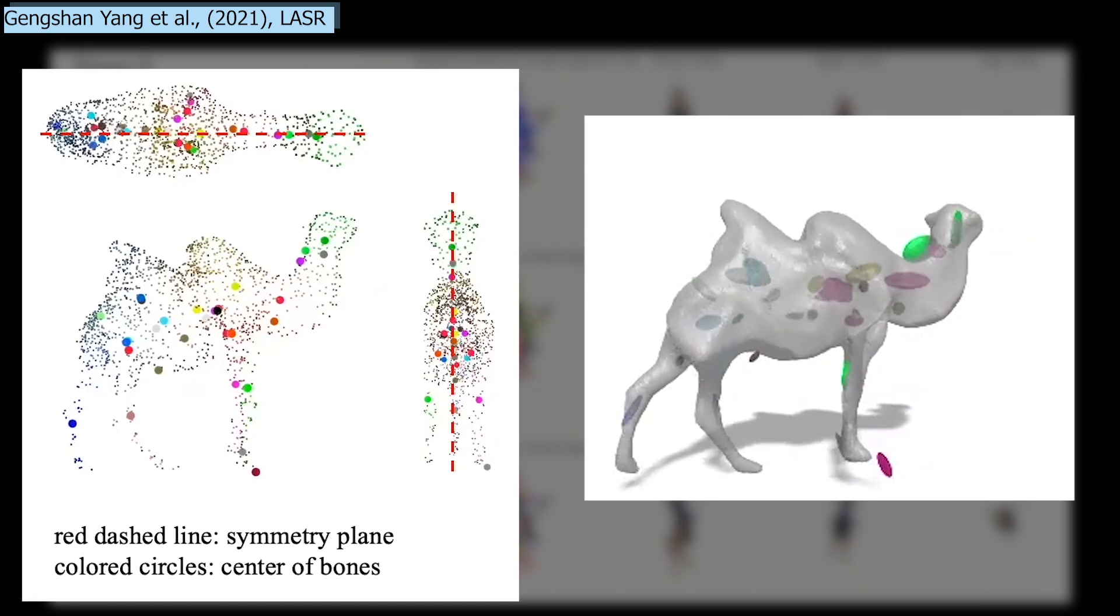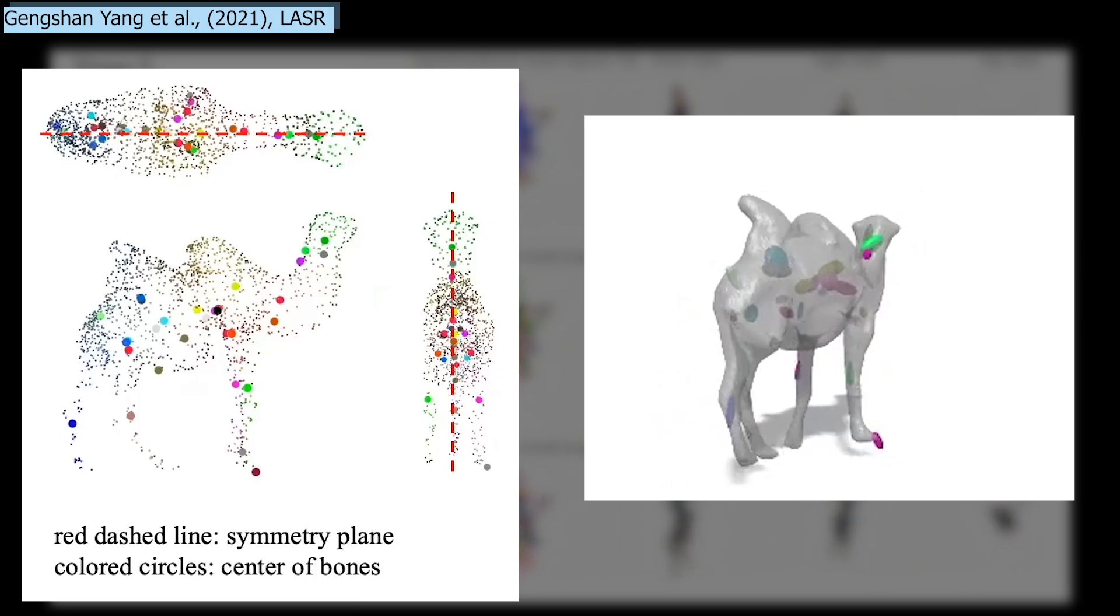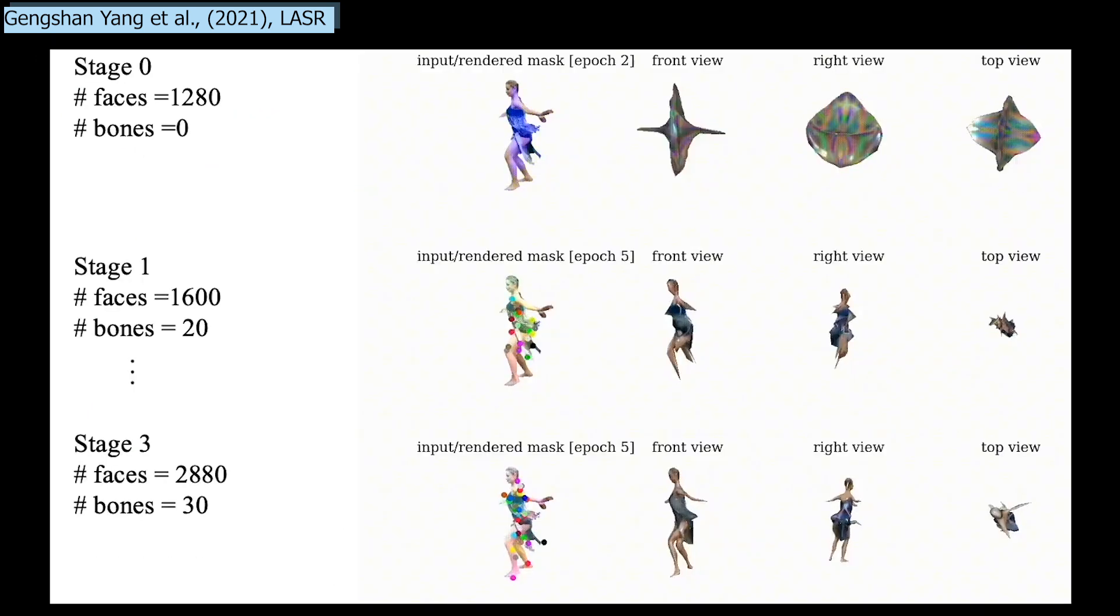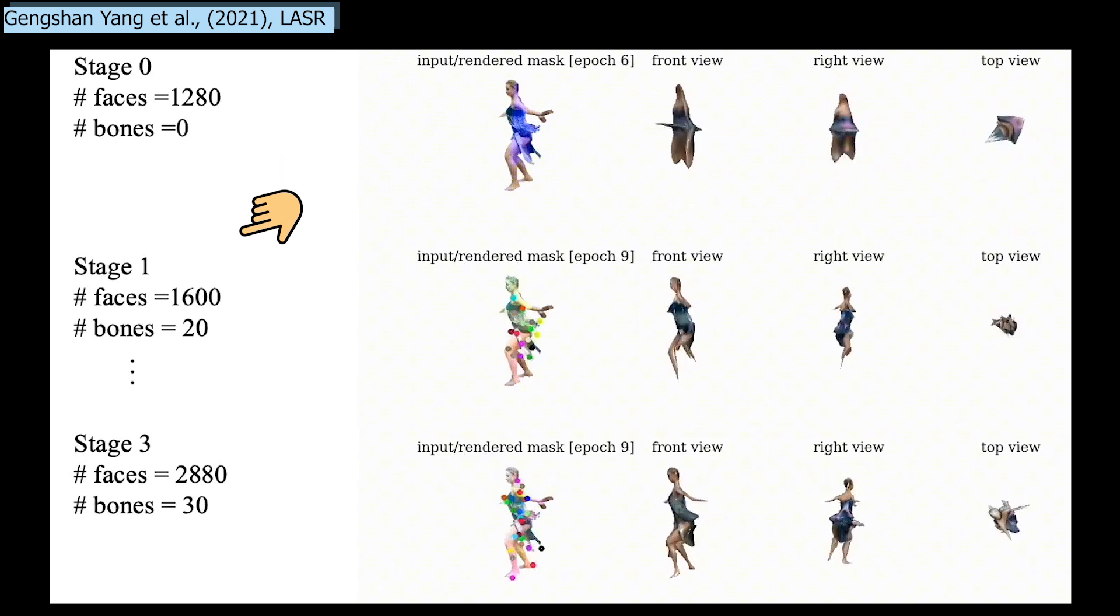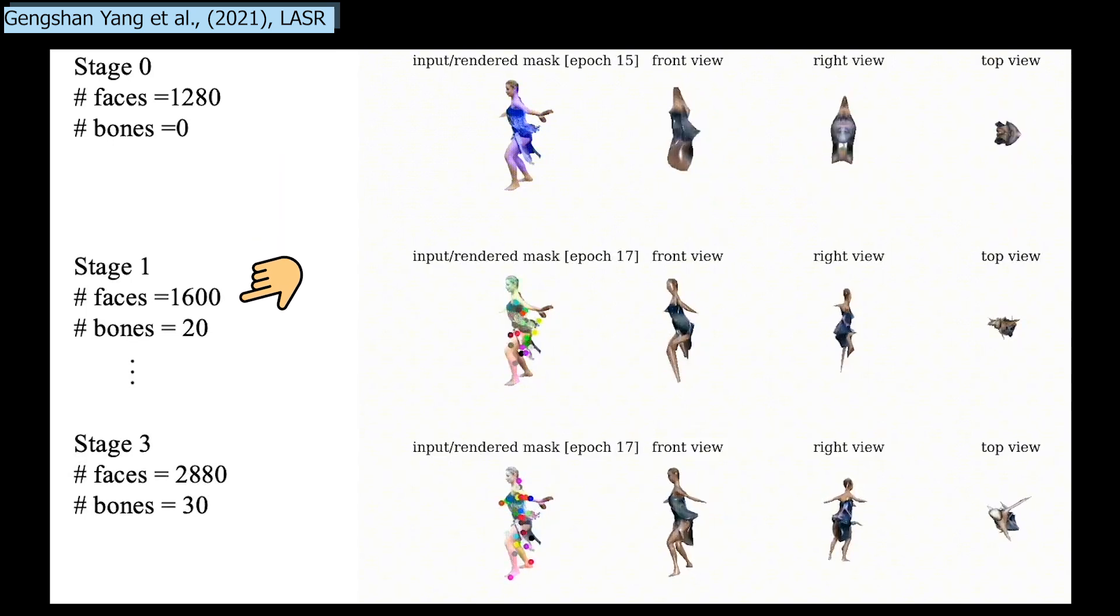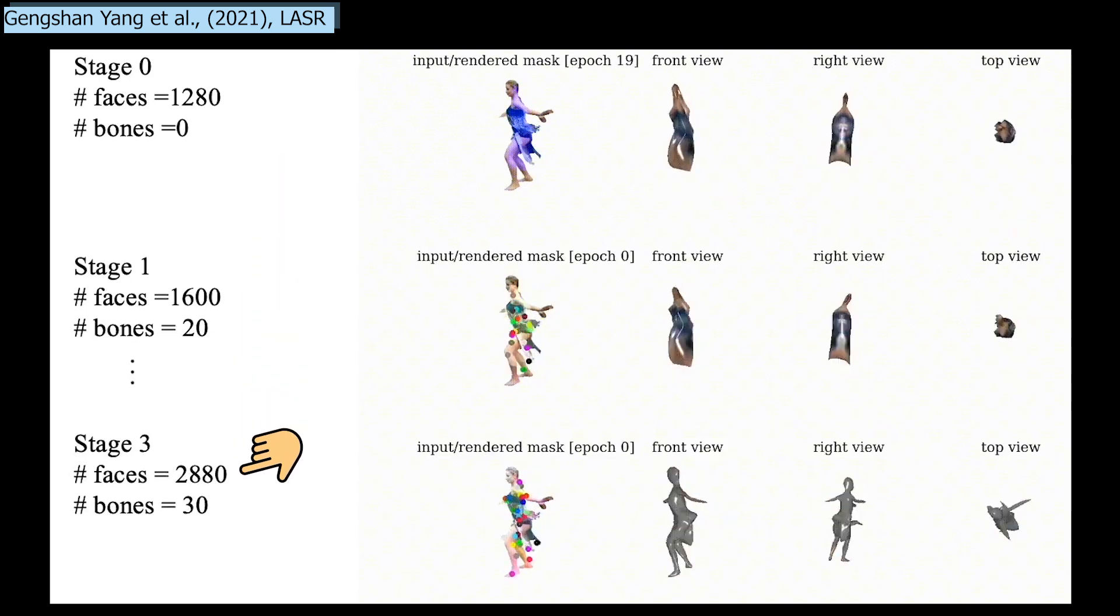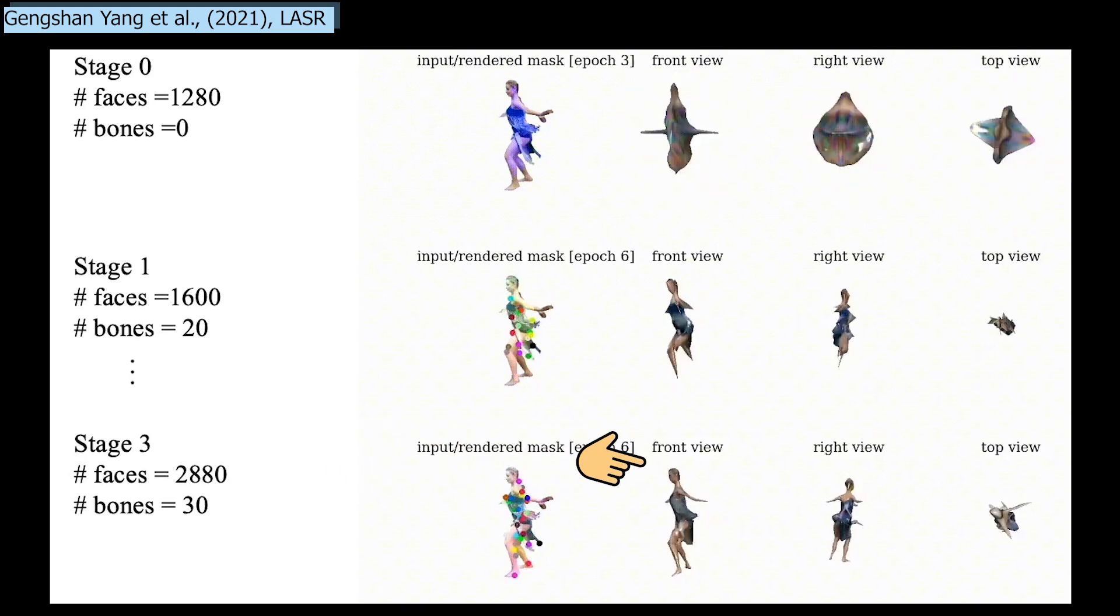These bones are all parts of the object that move during the video, either with translations or rotations. Both bones and vertices are incrementally augmented until we reach stage 3, where the model has learned to generate a pretty accurate render of the current object.